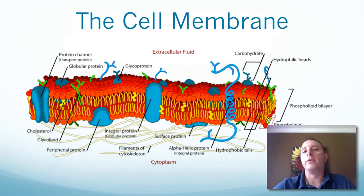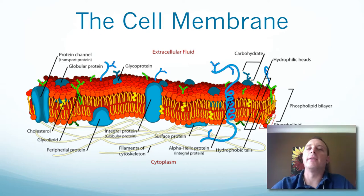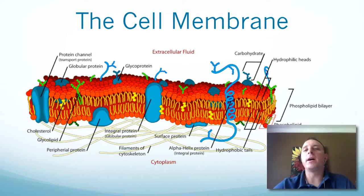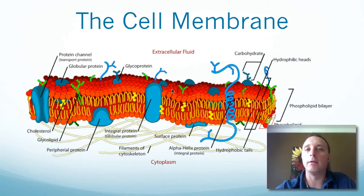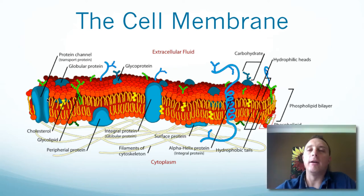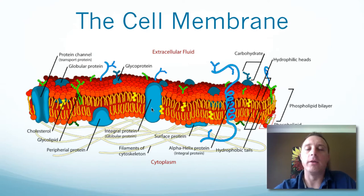I'm not going to go over the structure of the cell membrane in this lesson — you can find that other places. Just to remind you, it is made up mainly of a phospholipid bilayer, seen here in the red and yellow pieces. There are lots of proteins associated with the membrane as well, shown here in blue.